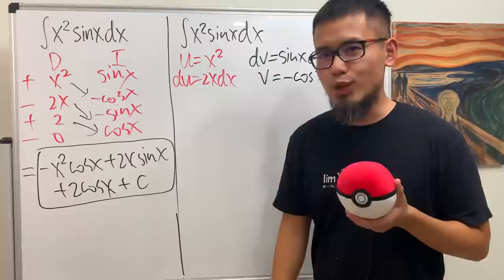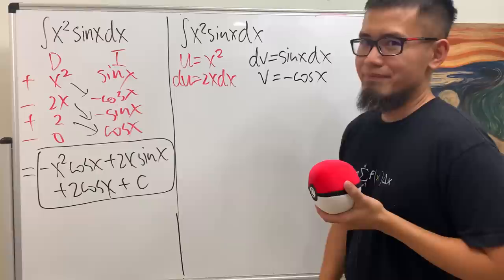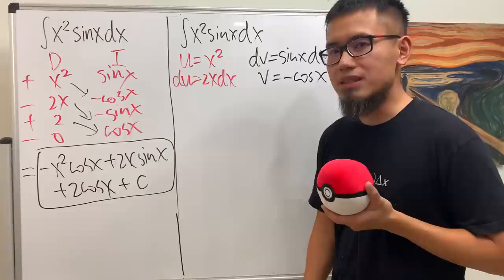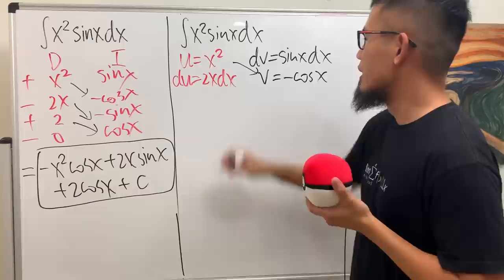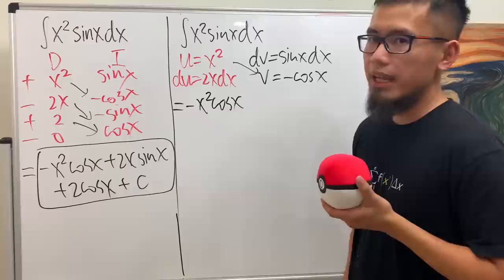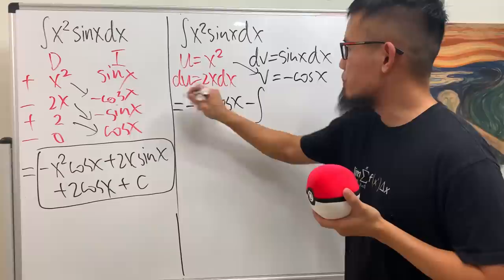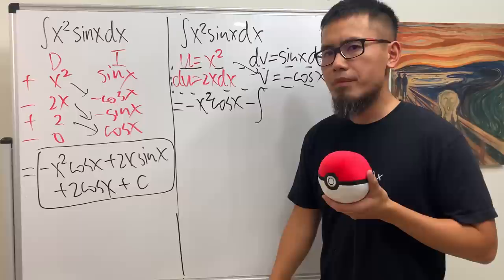Sometimes it's even worse, because you might have to run through integration by parts more than one time, so you have a lot of things to write down. The formula for integration by parts is: the integral of U dV equals UV minus the integral of V dU. UV is right here — we multiply them and get negative x squared times cosine x, and then minus the integral of V dU, which is precisely the product of that row.